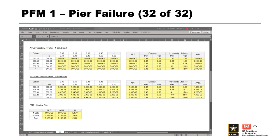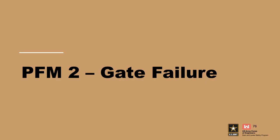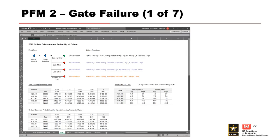Now we'll move on to our second PFM, gate failure. Many of the calculations for this PFM are identical to the ones just shown for PFM 1. However, there's an important difference at the front end of the calculations that we cannot miss. This slide shows the event tree for gate failure. While there was only one pier to consider in PFM 1, PFM 2 has to consider both spillway gates in the failure combinations.